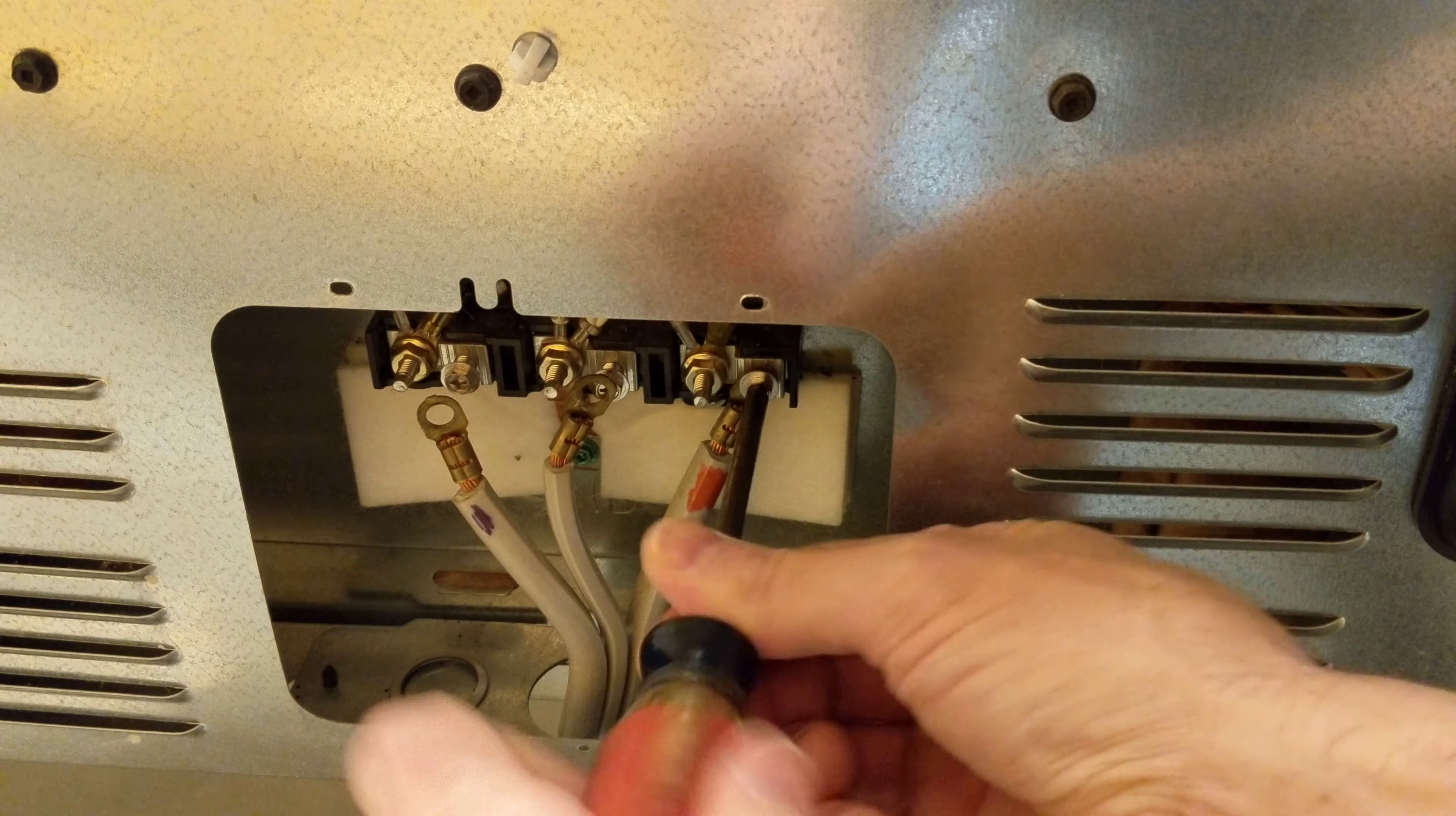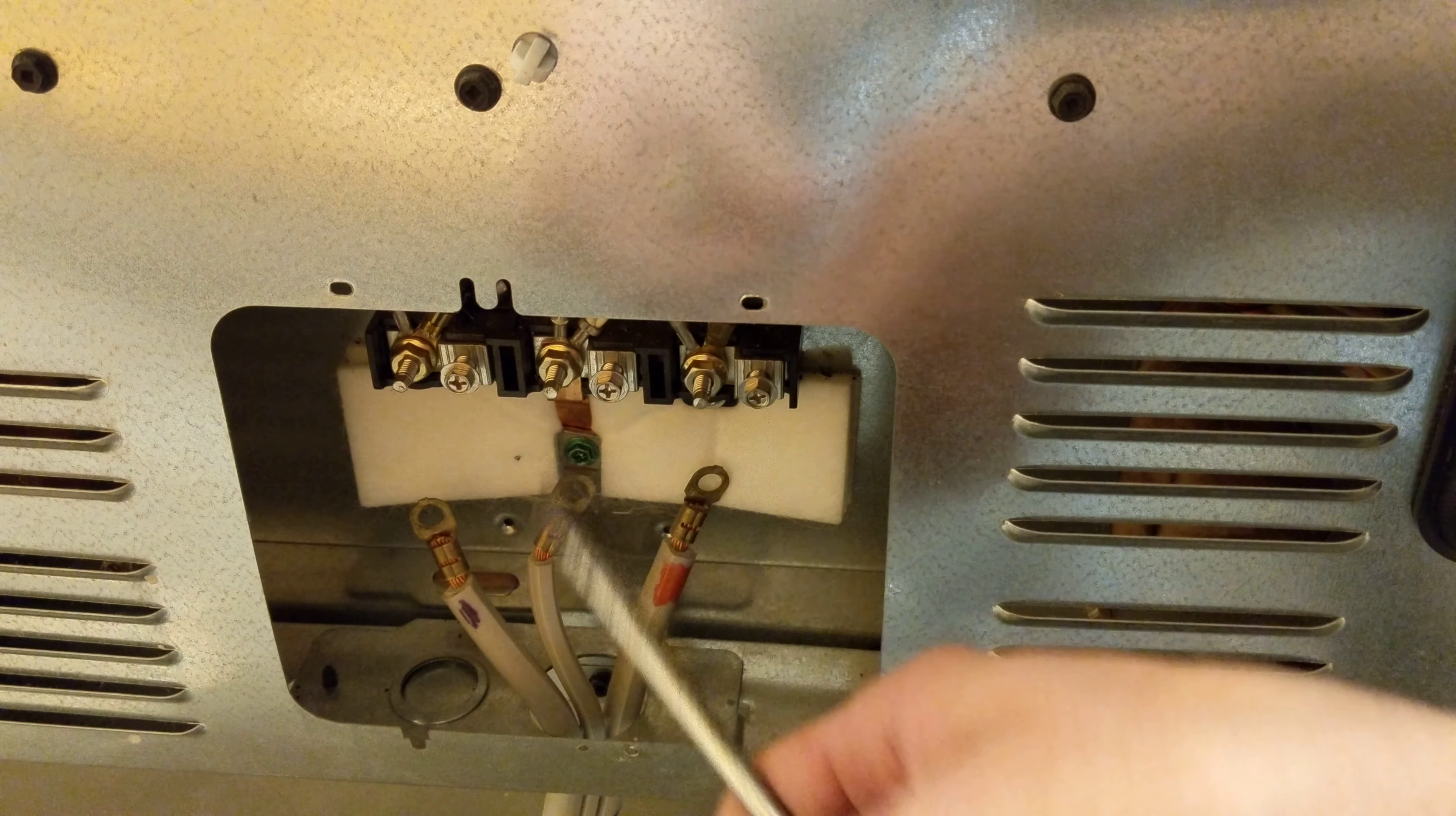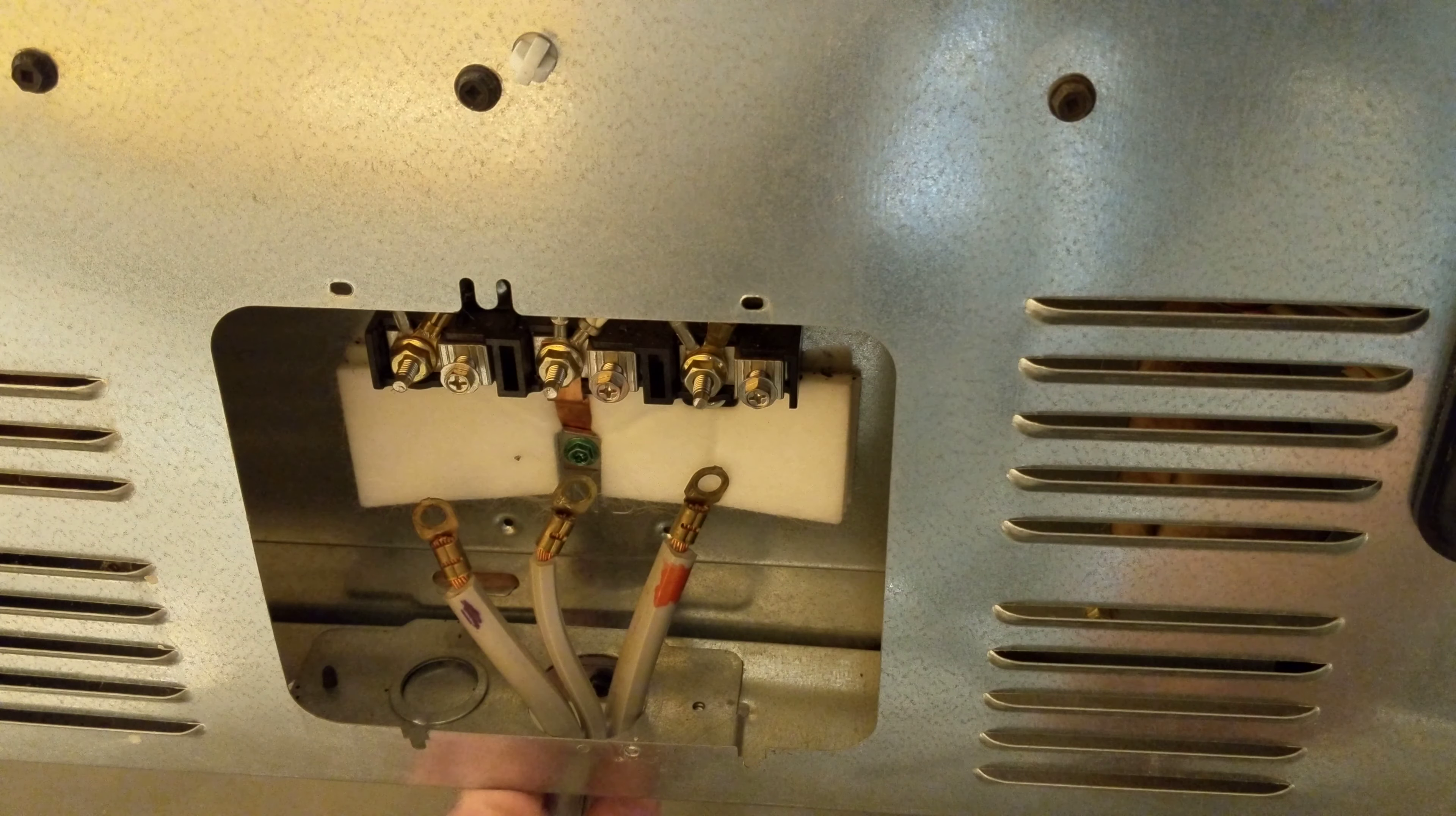When you're hooking up a three-prong cord to your stove, it has its own grounds. The grounding bar goes through the neutral here, and that's already connected. If you're using a four-prong, four-wire connector, it's gonna have its own ground and you won't use that grounding bar through the neutral.